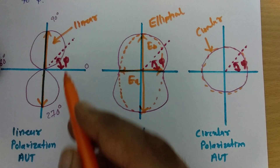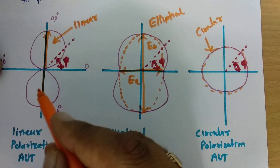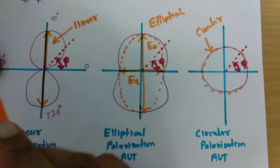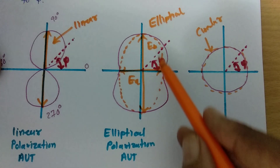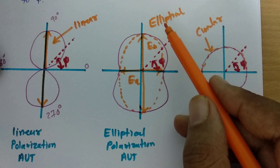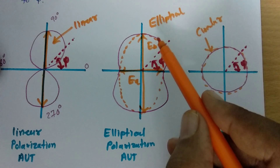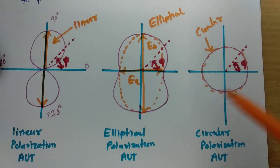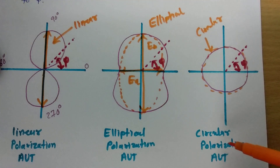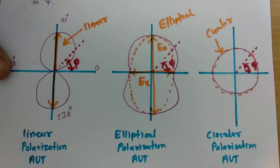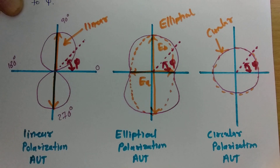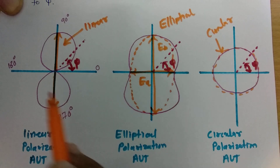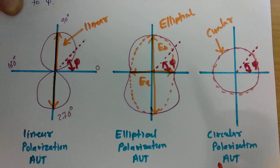To summarize: by the shape of the received pattern, we can say the transmitting antenna is linearly polarized. If the pattern shows unequal magnitudes on two axes, the transmitting antenna is elliptically polarized. If the received pattern has equal magnitude in all directions, then the AUT is circularly polarized. This is exactly what we are doing in the measurement of polarization.